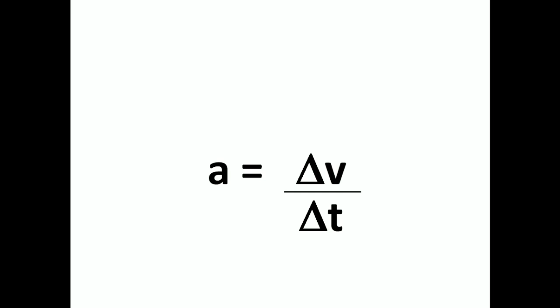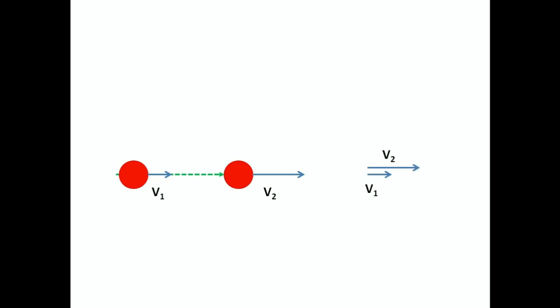Acceleration is defined as the change in velocity over change in time. In the case of an object moving along a straight line, the change in velocity, or delta v, is the difference between the object's velocity at point 1 and point 2.